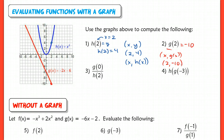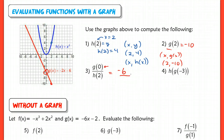For g of 0 divided by h of 2, take each one separately. Evaluate g of 0 first — if I go to 0, I have the coordinate (0, -6), so g of 0 is negative 6. That's negative 6 over h of 2. We already know h of 2 is equal to 4, so if we simplify and evaluate this, we get negative three halves.